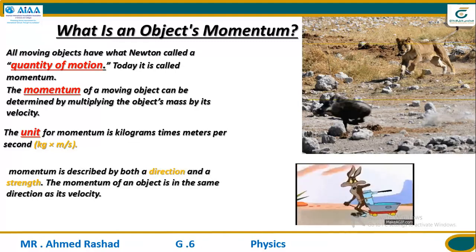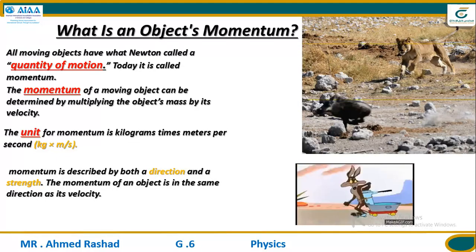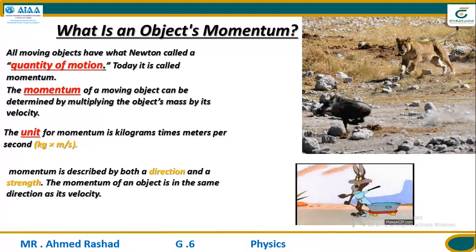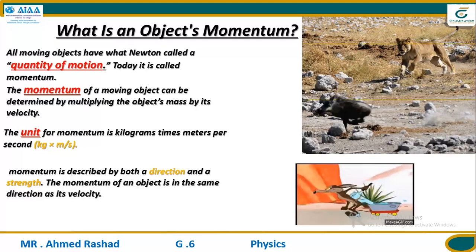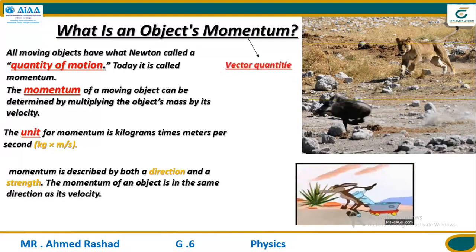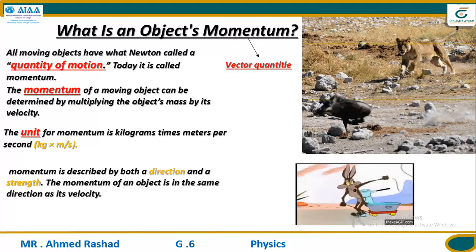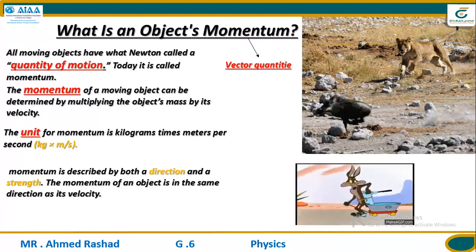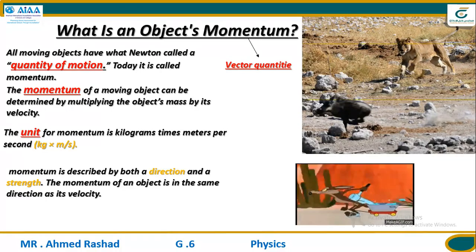Momentum is described by both direction and strength, just like velocity. Momentum acts in the same direction as velocity. Now, is momentum a vector quantity or a scalar quantity? It is a vector quantity, because it is described by two factors: direction and strength — just like velocity. The direction of an object's momentum is the same as the direction of its velocity.